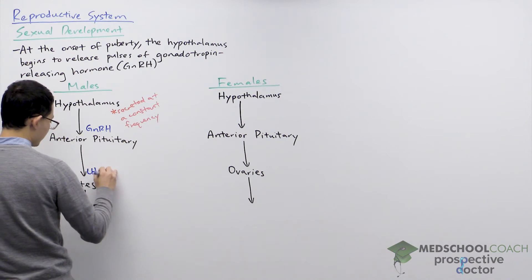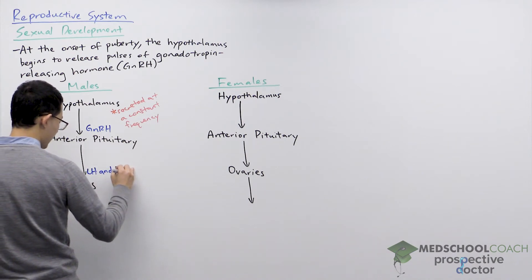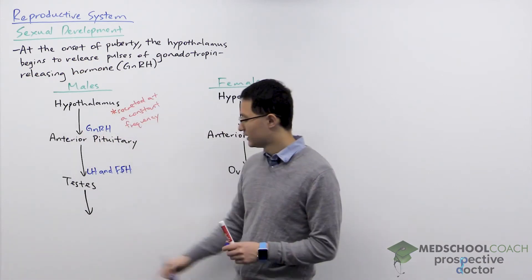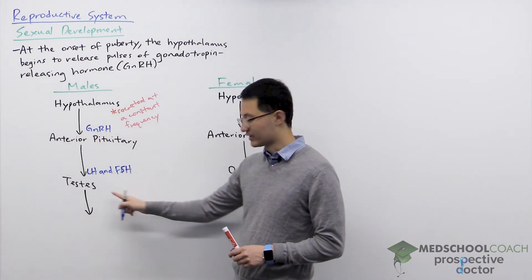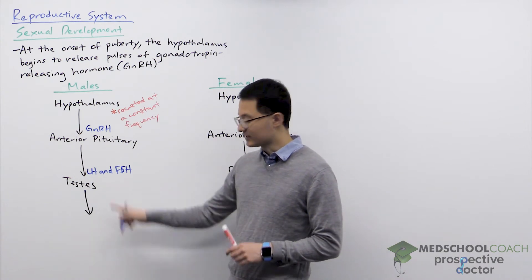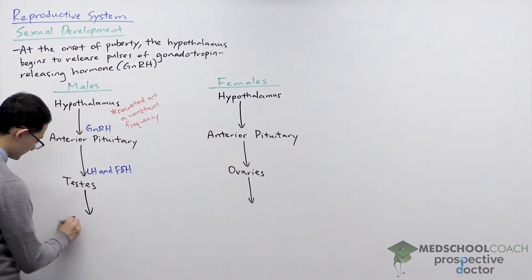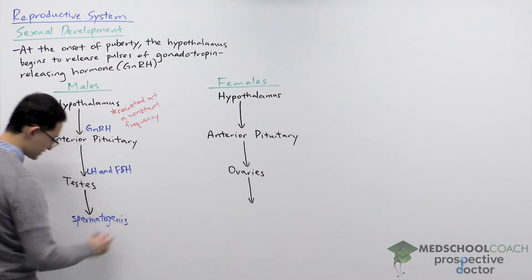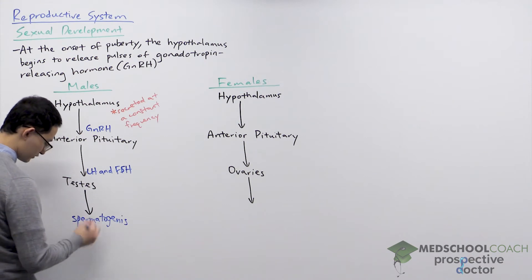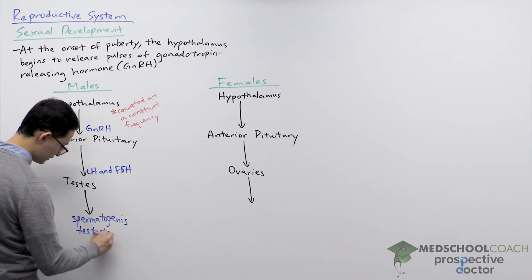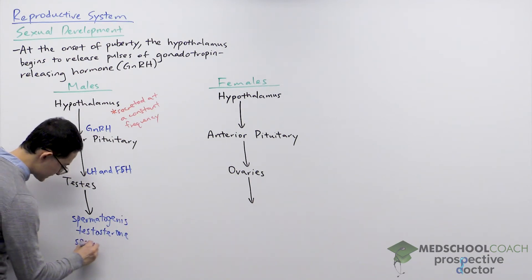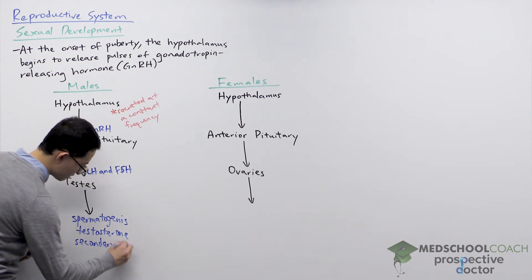LH and FSH are going to act on the testes, and this is going to result in spermatogenesis — the production of sperm cells. It's also going to result in the release of testosterone, and this is going to result in the secondary sex characteristics of males.